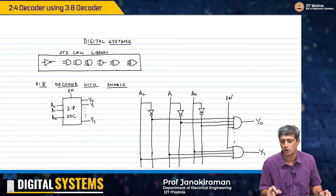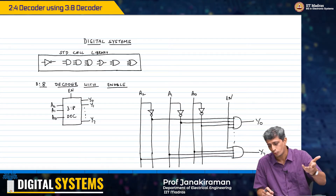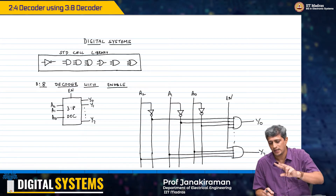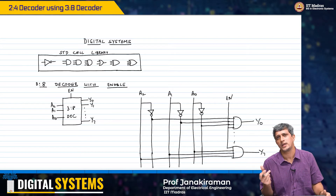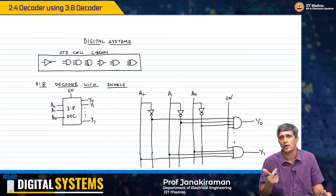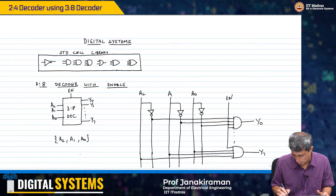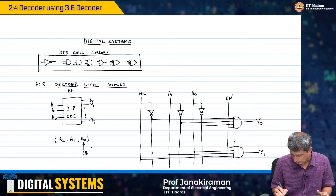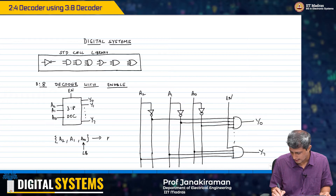Whenever the enable is 0, none of the outputs will go high. If the enable is 1, then depending on the input combination, one and only one output will go high at a given time. The output that goes high corresponds to the binary number formed by a2, a1, a0 — whichever number k that binary value corresponds to, the kth output will go high.